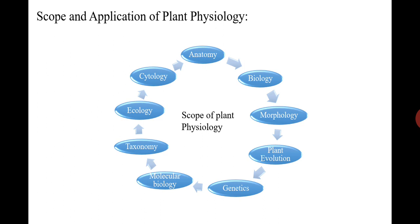First we will discuss the scope in basic sciences. We know that basic science includes anatomy — the study of internal structure — cytology, the study of cell structure, biology, all biological processes, morphology — the study of external characters of the organism — plant evolution, how plants evolved, genetics — the science of inheritance — molecular biology — the study of DNA, genes and chromosomes — taxonomy — the study of identification, nomenclature and classification — and ecology, the study of environmental science.